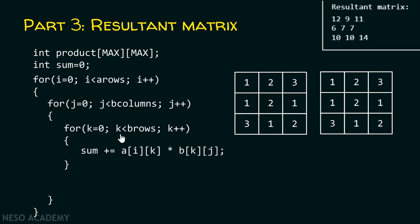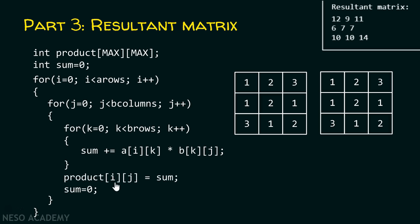We increment k again, check the condition — it is satisfied — and this time we access the element at index [0][2] from matrix A, and the element at index [2][0] from matrix B. The next elements multiplied are three and three, giving nine. Nine gets added to three, so sum now contains twelve, which is the value we want. We then store this sum inside product[i][j], that is product[0][0] — the first row and first column of the result. After that, sum is re-initialized to zero and the same process continues.